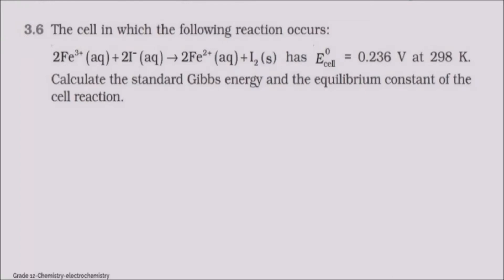The cell in which the following reaction occurs: 2Fe3+ aqueous plus 2I- aqueous to give 2Fe2+ aqueous and I2 solid, has E°cell value 0.236 volt at 298 Kelvin. To calculate the standard Gibbs energy and equilibrium constant of the cell reaction.